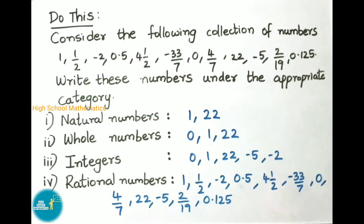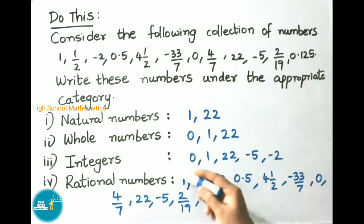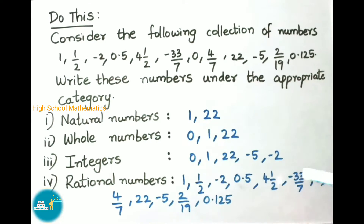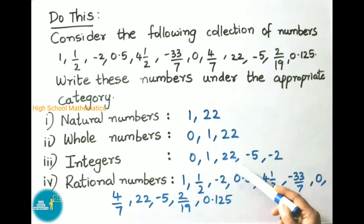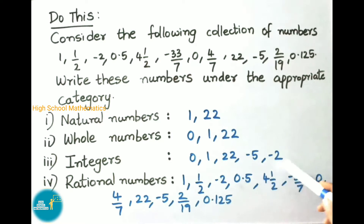Next, integers — along with all whole numbers, negative numbers also come under integers. So from the given collection, the integers are 0, 1, 22, -5, and -2.